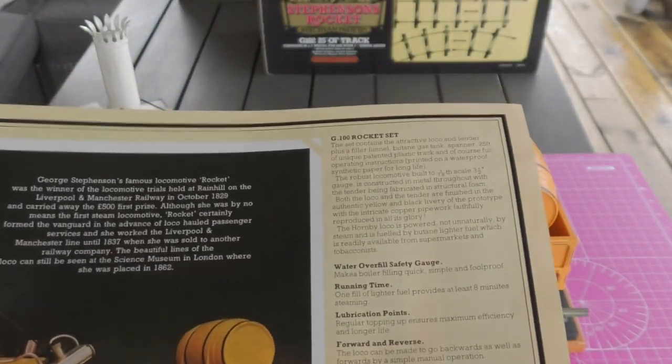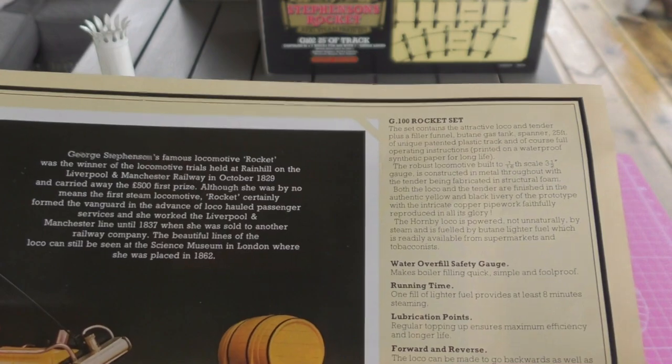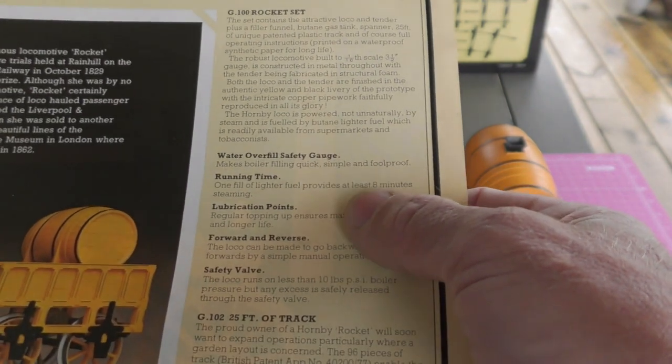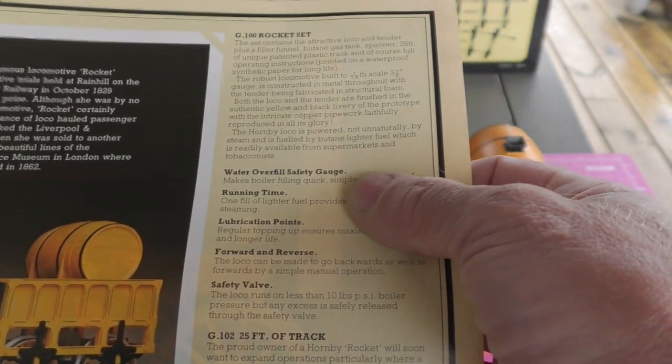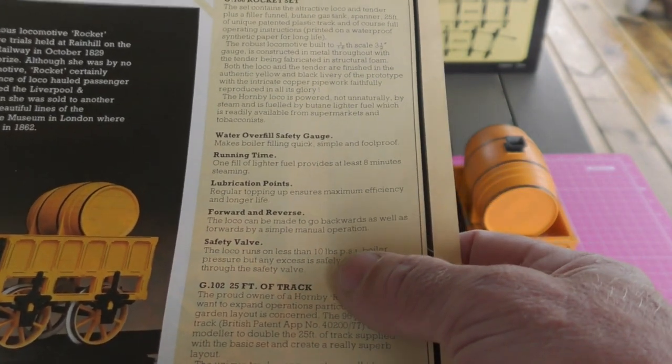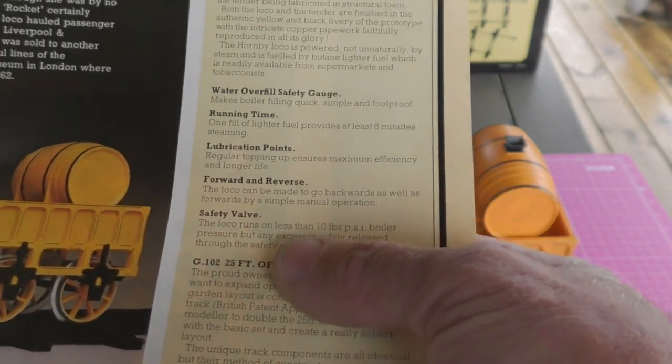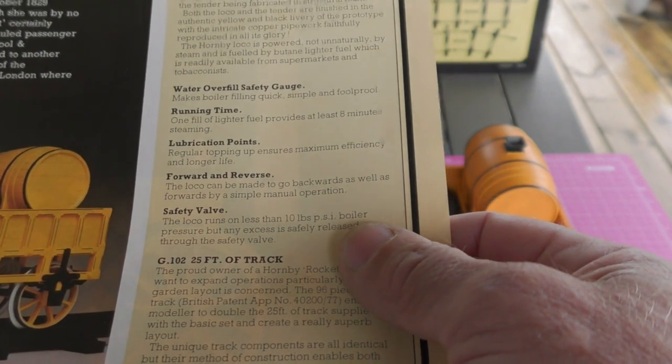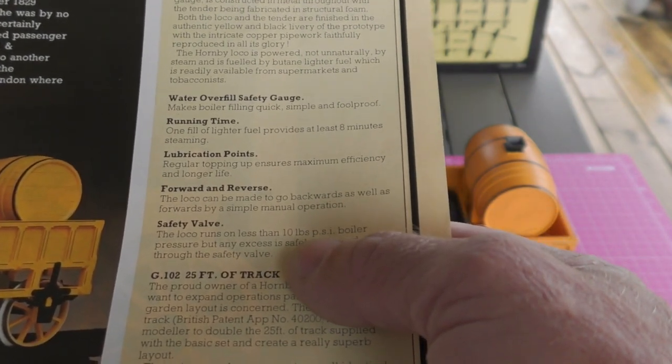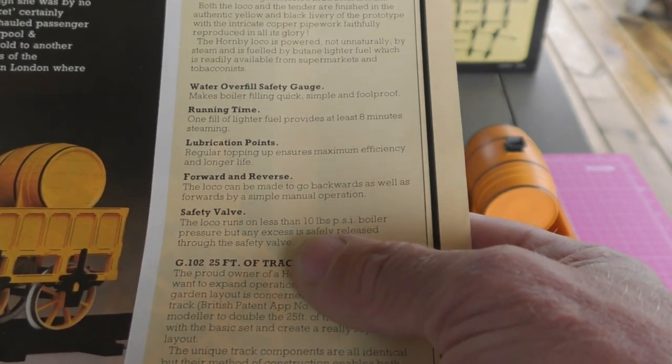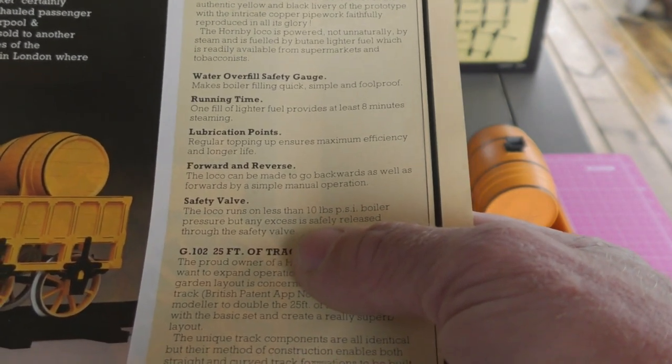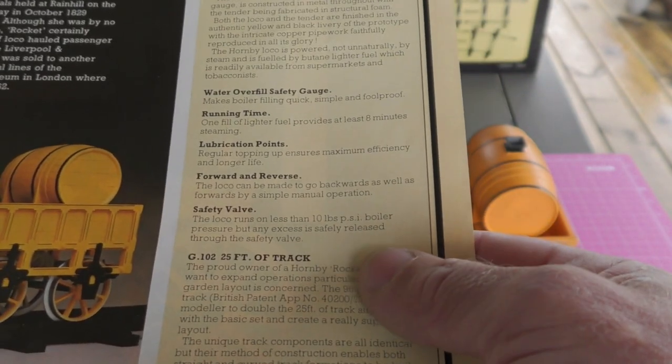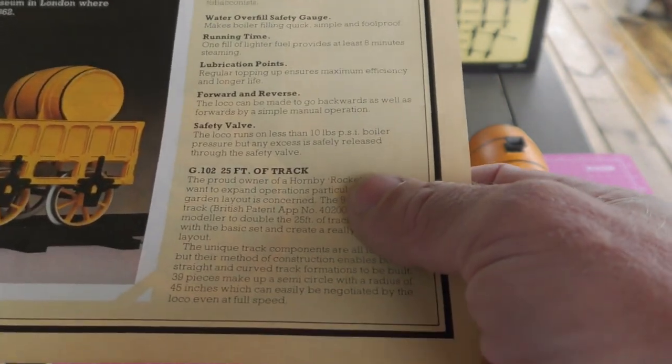My 1979 catalogue, there's nothing in the catalogue itself but there was this really quite lovely insert. That says real steam train set, 25 feet of track, three and a half inch gauge model Stephenson's rocket. You can see the impressive vapor emerging from the chimney stack. On the back a little bit more information about the history but what I'm interested in is some of these points here. Safety valve, the loco runs on less than 10 psi, so that's not a terribly high pressure. Any excess is safely released through the safety valve. We'll be checking that out I can assure you.